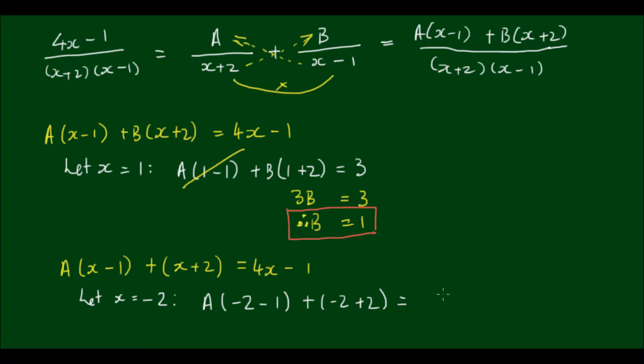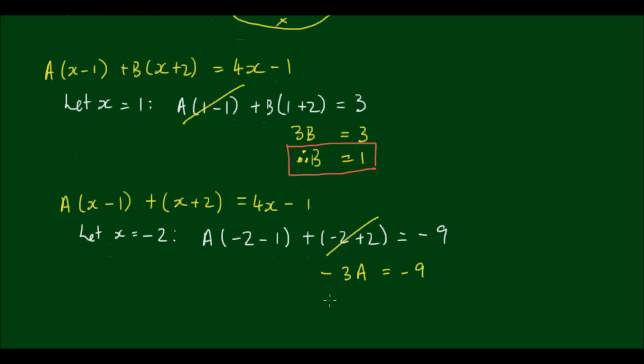So this part goes to 0, and I have negative 3A is equal to negative 9. So therefore, A is equal to 3.